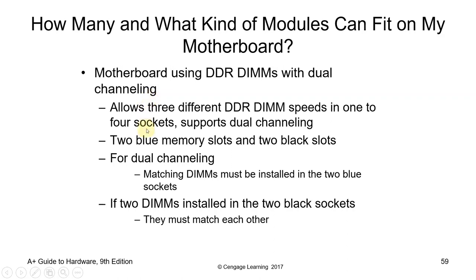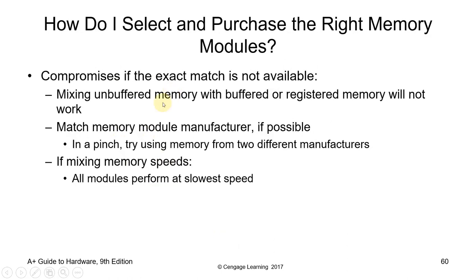For a motherboard using DDR DIMMs with dual channeling: it allows three different DDR DIMM speeds in one to four sockets supporting dual channeling — two blue memory slots and two black slots. For dual channeling, matching DIMMs must be installed into the two blue sockets. If two DIMMs are installed in the two black sockets, they must match each other. When mixing memory speeds, all modules perform at the slowest speed.